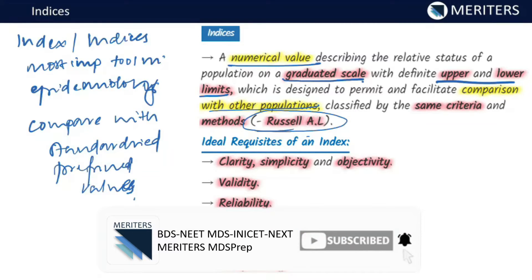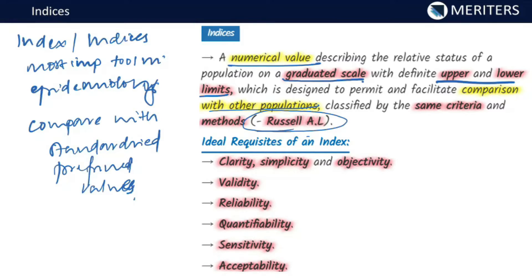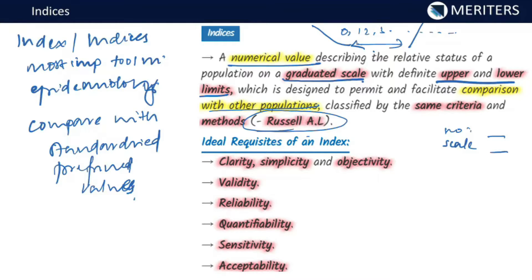An index represents the status of a current population on a graduated scale with definite upper and lower limits. It cannot go to any arbitrary extent — there is a specific cutoff upper limit and a specific cutoff lower limit, and values only vary between these limits. The scale is designed to permit and facilitate comparison with other populations described by the same criteria and methods.